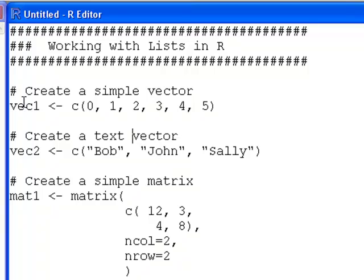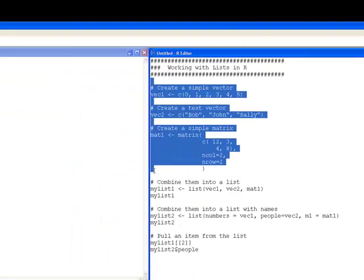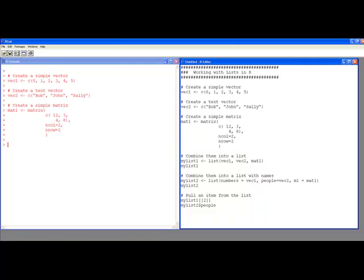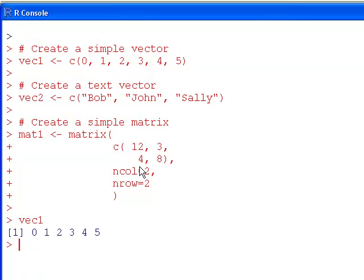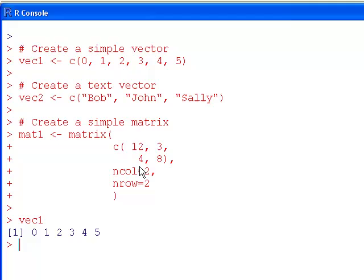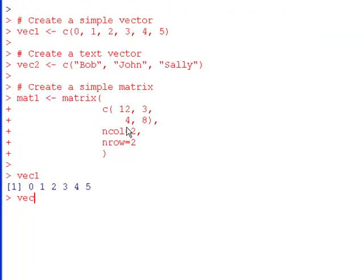So the first thing I'm going to do is just run this code here so we can see what the output looks like. Okay, notice it ran fine. If I wanted to look at any of the items, I could simply type in here in the console Vec1 and there's my vector. I could also type in Vec2 and there's my vector. And I can also look at mat1, which is my matrix.